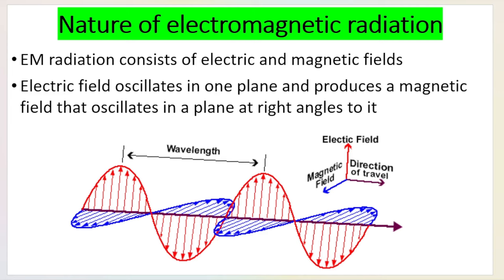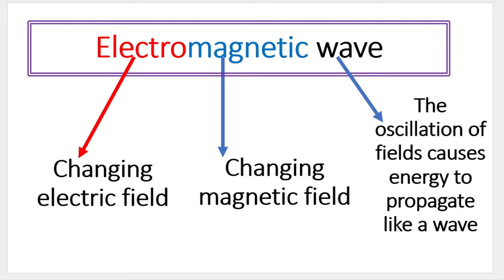The electric field oscillates or moves in one plane and produces a magnetic field that oscillates in planes at right angles to it. In this diagram, the red represents the electric field, and the magnetic field is shown at 90 degrees to it in a three-dimensional arrangement. The direction of travel is perpendicular to both. They recreate one another, and that is how the energy is transferred.